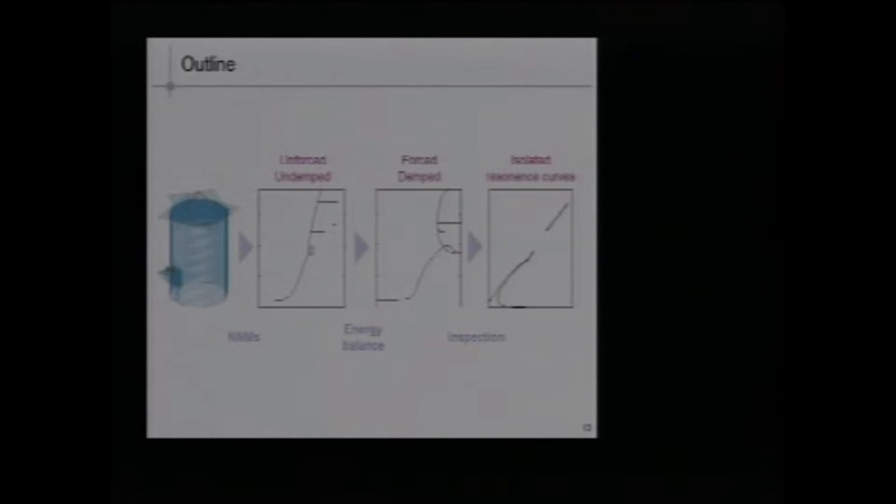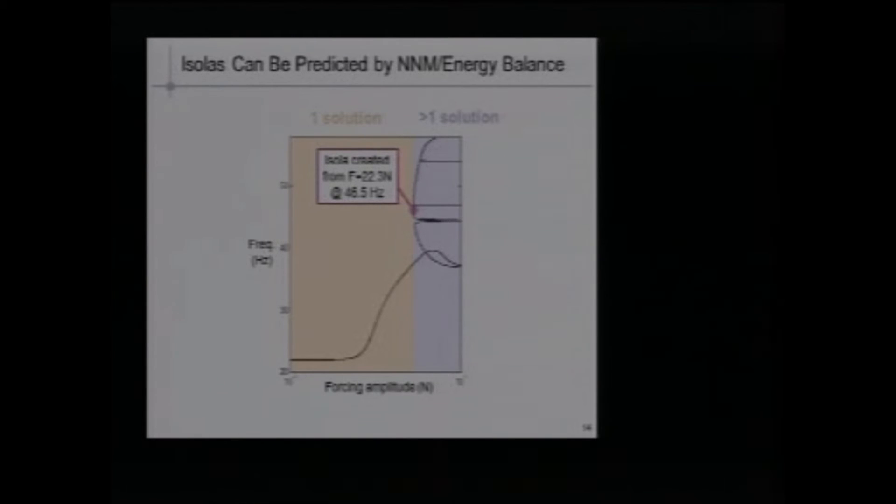Now we are going to inspect this energy balance plot very carefully to reveal isolated resonance curves. Let's go back to the plot. We are going to increase gradually forcing amplitude. If we increase forcing amplitude, we have one solution, one solution, one solution. But at a very specific point, we have many solutions, many possible solutions. Actually these are potential additional resonances. At this point, you create new solutions. I will show you that you create actually isolas. Keep this number in mind. According to this prediction, we should have an isola created at 22.3 Newton and at a frequency of 46.5 Hertz.